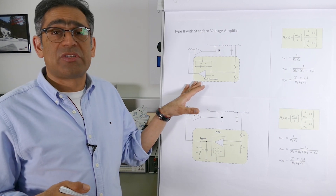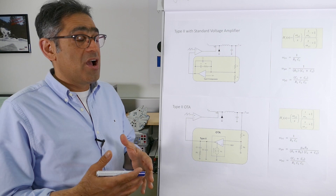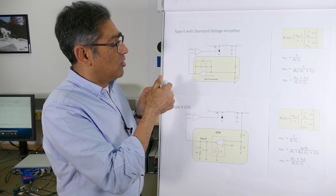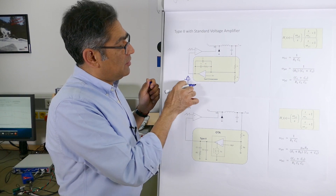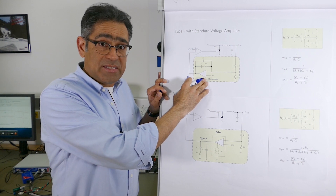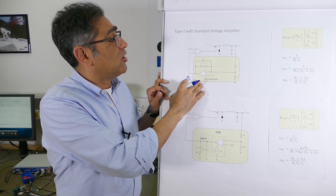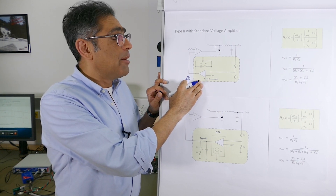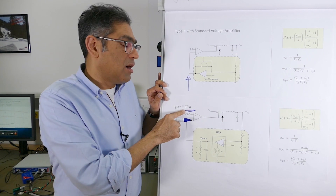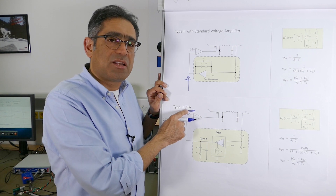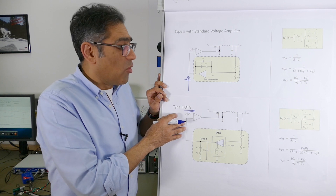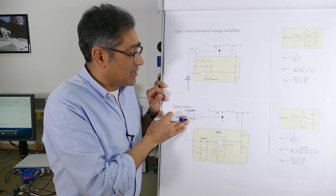This is a type of thing that you study at university. We are all very comfortable about designing a filter whereby the output here is a voltage. Now many chips come with this type of amplifier inside for designing compensators for power supplies, but there are some which are called operational transconductance amplifiers, and it's actually very easy to design one with an operational transconductance amplifier.